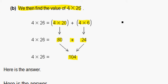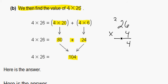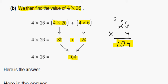If we want to, we can check 26 times 4 to see if we get the same answer. 4 times 6 is 24. 2 times 4 is 8 plus 2, 104. We get the same answer, 104.